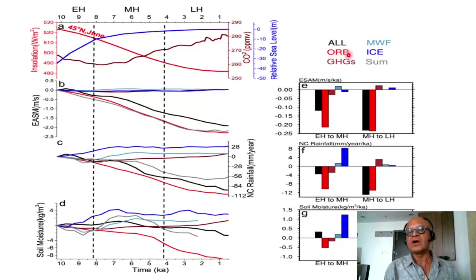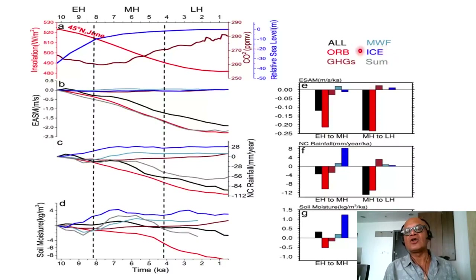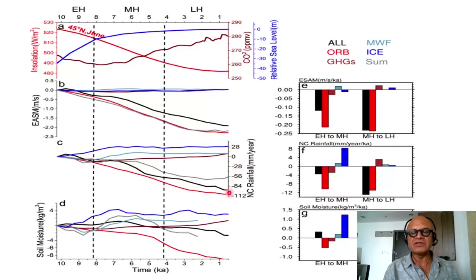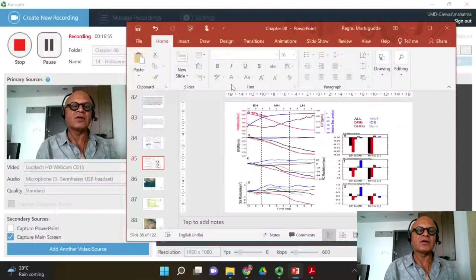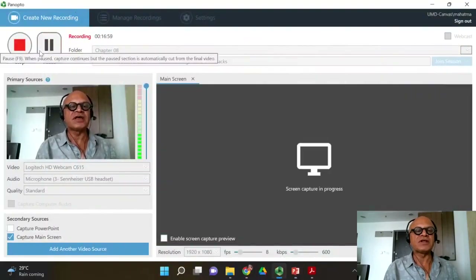All four forcing components together are: orbital forcings (insolation), relative sea level from ice forcing, greenhouse gases (CO2 and possibly methane and N2O), and melt water flux applied to the North Atlantic to perturb the meridional overturning circulation. Northern China rainfall responds to these forcings with either increases or decreases, and the net result — especially for soil moisture — is a combination of all these factors, which is what models are well suited to capture.